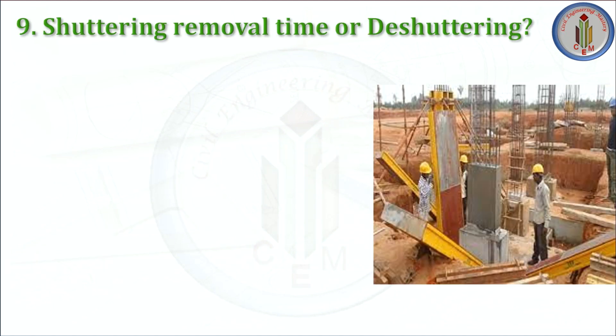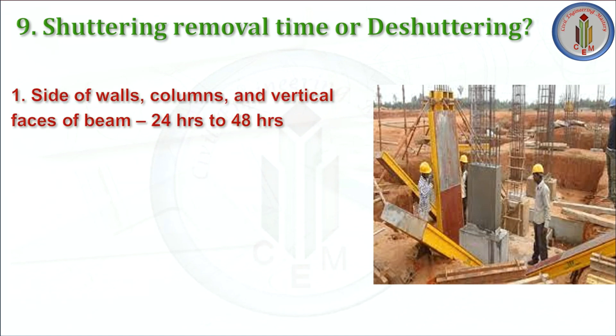Next: shuttering removal time, also called deshuttering or formwork removal. The rate of hardening of concrete depends on temperature and affects the formwork removal time. After concreting, the time required to remove the formwork depends on the strength of concrete and temperature. Time required in winter will be more than in summer. For side walls, columns, and vertical faces of beams, it takes 24 to 48 hours.